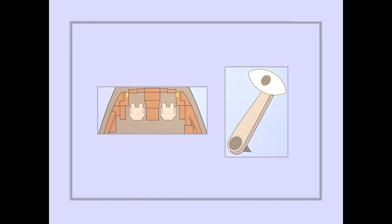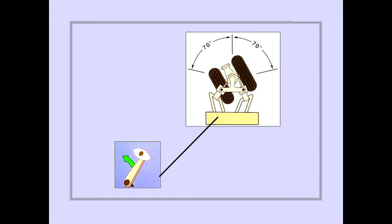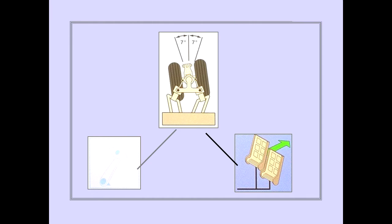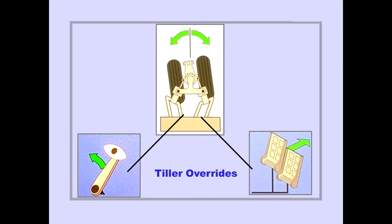The primary airplane steering controls are the tillers, located on the captain's and first officer's sidewall panels. Tillers provide nose gear steering authority of approximately 70 degrees in each direction from center. If both the tiller and rudder pedals are operated simultaneously, tiller inputs override rudder pedal inputs.